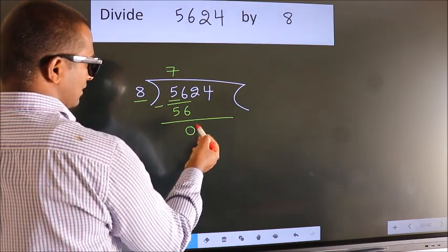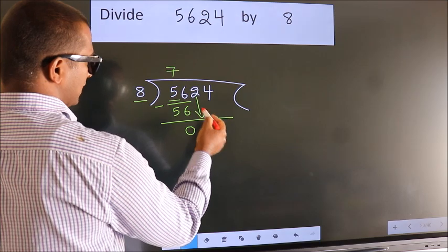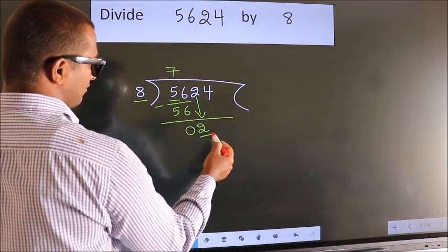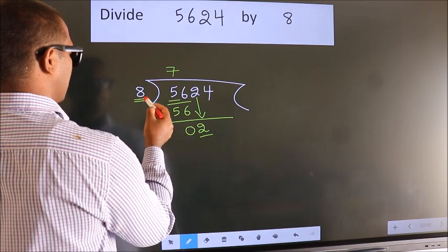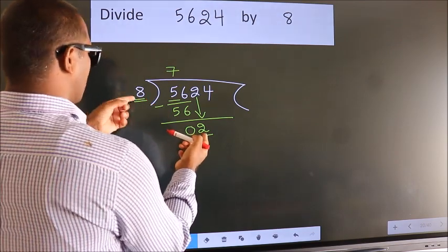After this, bring down the next number. So, 2 down. Here we have 2, here 8. 2 is smaller than 8.